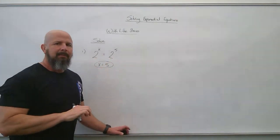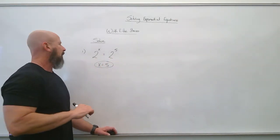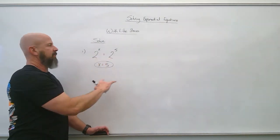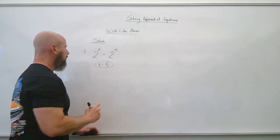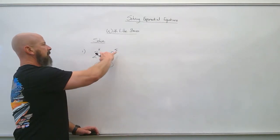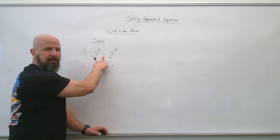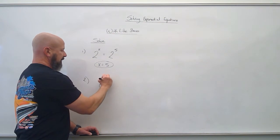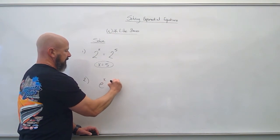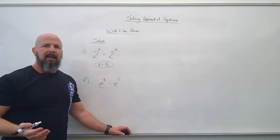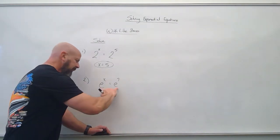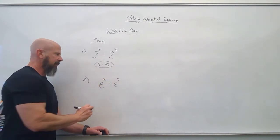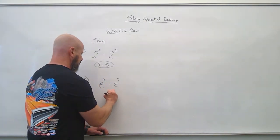We're not dividing both sides by 2. We're noticing that they're the same base, and that's why those two exponents have to be the same to create a true statement. Same idea with e to the x equals e to the seventh — I don't really care what the base is, but once I realize they're the same, the two exponents have to be the same. So x equals 7.